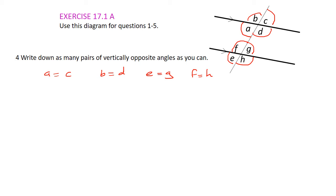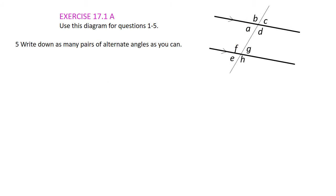Check your answers, give yourself a tick if you've got them right, and if you haven't, make sure you do your corrections. Number five: write down as many pairs of alternate angles as you can. We're looking for the Z shape. For alternate angles, a is equal to g — there's angle a and there's angle g. And doing the Z backwards, d is equal to f. Mark your answers and go on to the next one.